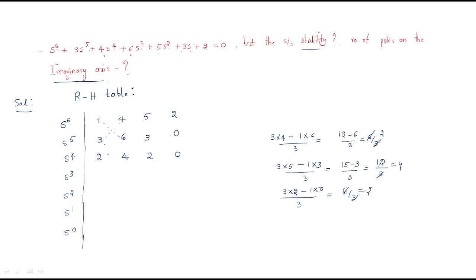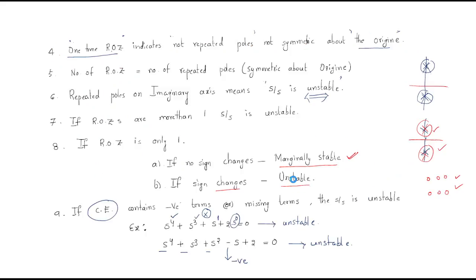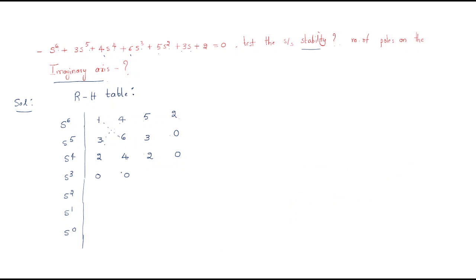Moving to the s³ row: computing the entries gives 0 — for example, 2×6 − 4×3 = 12 − 12 = 0, and similarly the other entry becomes 0. So we get a row of zeros at the s³ level. Whenever we get a row of zeros, we must take the auxiliary equation from the row above.